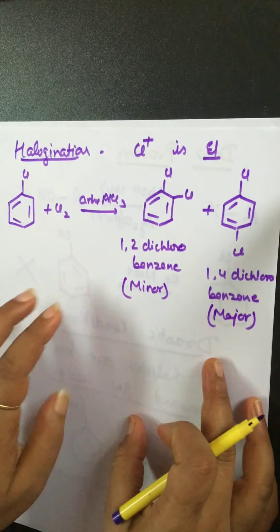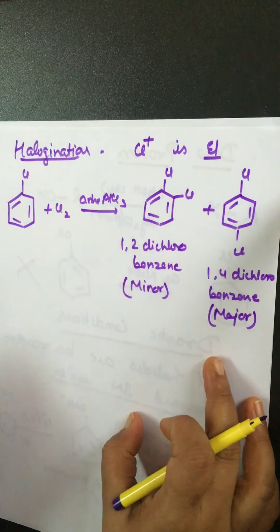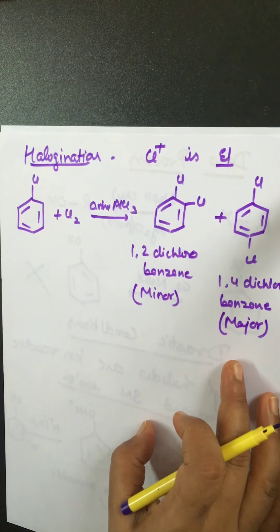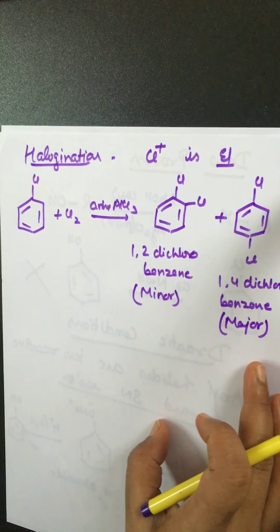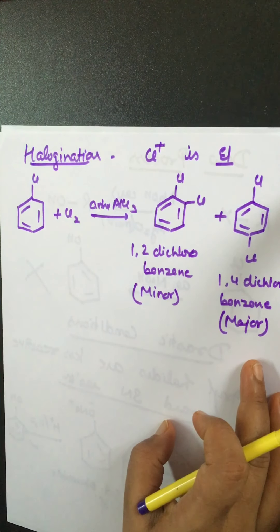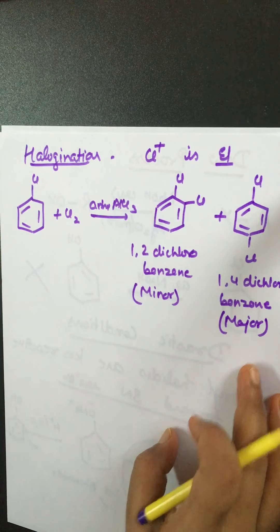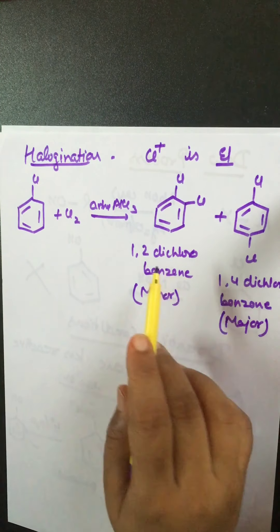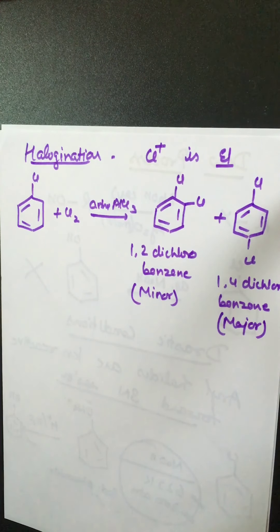Out of these two products, the para product is major while the ortho product is minor. This is because of electron-electron repulsion, making the para product more stable in comparison to the ortho product.